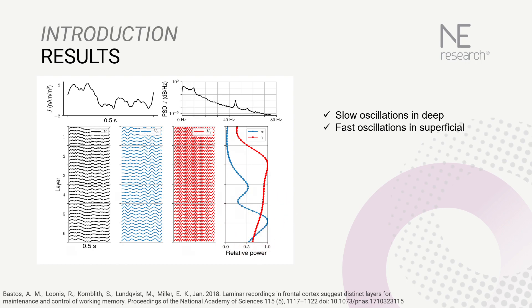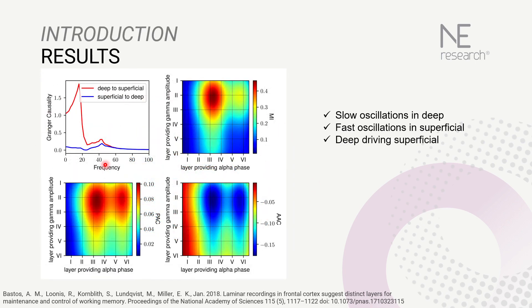What about the couplings between them? We decided to plot the Granger causality, modulation index, phase-amplitude coupling, and amplitude-amplitude coupling. We see there's a drive from deep to superficial layers in the alpha band, a positive modulation index in phase-amplitude coupling from deep alpha to superficial gamma, and negative amplitude-amplitude coupling from deep alpha to superficial gamma as well. This replicates the monkey data from the Bastos group.